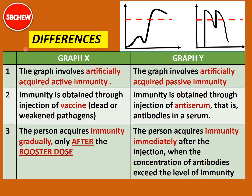Now let us look at the differences. If you do not recognise the shape of the graphs or understand how they were derived from vaccine or antiserum injection, go through the video on types of immunity first. For the first difference: Graph X involves artificially acquired active immunity, while Graph Y involves artificially acquired passive immunity. This was already stated at the beginning of the answer, so writing it again here won't earn extra marks, but it's useful for clarity.